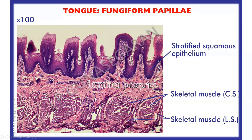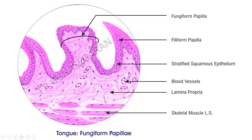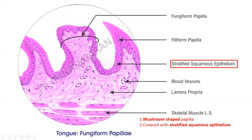This is a section of tongue showing fungiform papillae. Fungiform papillae are like mushrooms with a narrow base and rounded top, well appreciated in this photomicrograph. Adjacent to a fungiform papilla there is a filiform papilla. The skeletal muscle fibers are seen, with one bundle cut crosswise and another cut longitudinally. In the HND drawing, fungiform papillae are identified by their mushroom shape, covered with stratified squamous epithelium, with skeletal muscle fibers in different directions; the top surface may show few taste buds.